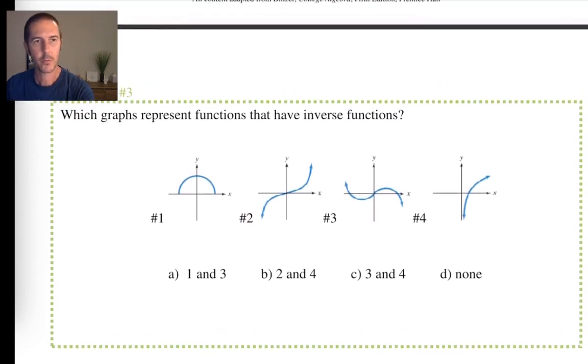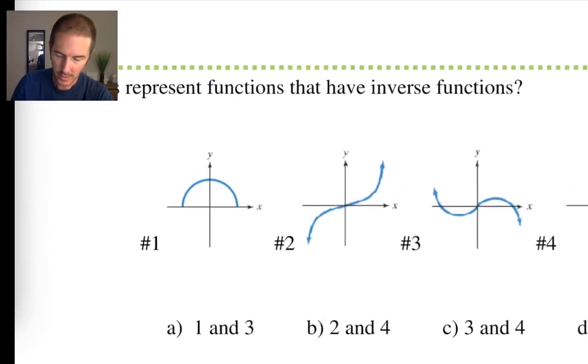So here's an example where we're being asked to determine which graphs represent functions that have inverse functions. A graph can have an inverse without that inverse being a function, but we want a graph to have an inverse that's also a function. Now, every one of these graphs on the screen right now passes the vertical line test. So these are already all functions. However, let's try the horizontal line test on this first graph. Oof, fail. Our horizontal line passes through our graph at more than one point. Therefore, while this is a function, it does not have an inverse that's a function.